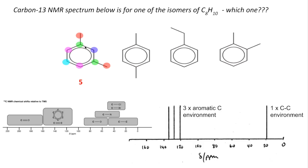Moving to the next isomer: it has a line of symmetry both vertically and horizontally. Applying the symmetry, pairs of carbons are equivalent to each other, giving only three environments in total. This gives three aromatic carbon environments, which matches our spectrum.